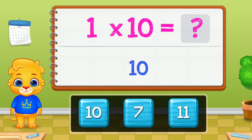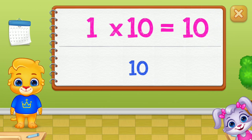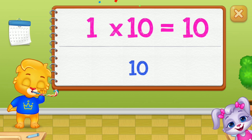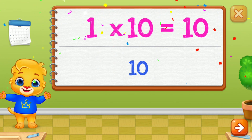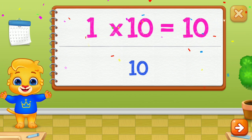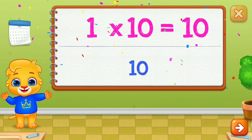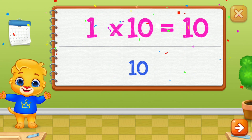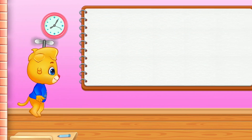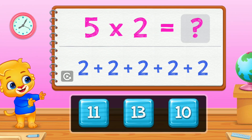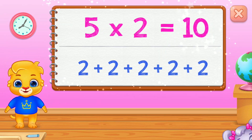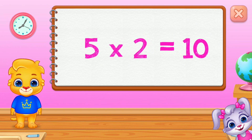If you can add numbers, you can multiply them. 1 times 10 is the same as adding 10 — 1 times 10 equals 10. 5 times 2 equals 10.